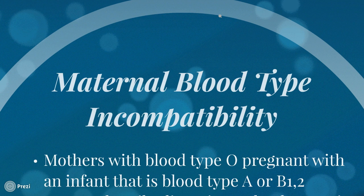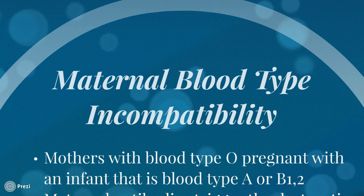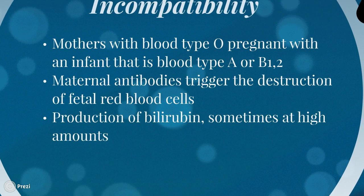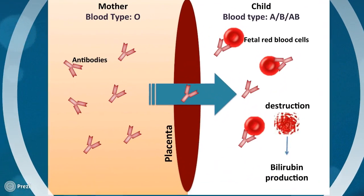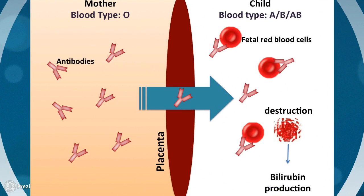One risk factor for neonatal jaundice is maternal blood type incompatibility. Maternal blood type incompatibility occurs when the mother of an infant possesses a different blood type from her child. To understand how this works, we have to look at the immune system. The immune system keeps out things that aren't usually found in our body. One way it achieves this is by producing antibodies that can bind to and trigger the destruction of other proteins and cells that do not match with our own.